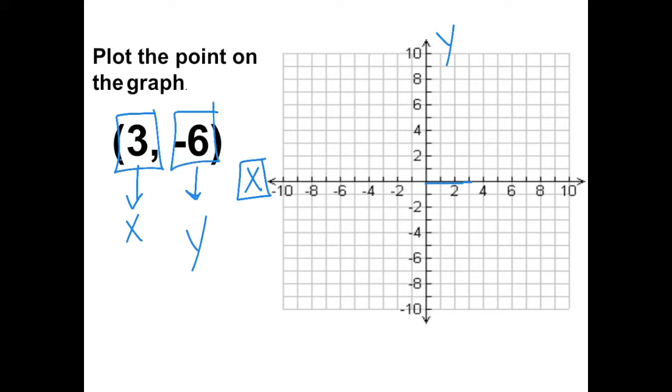Then when we're plotting our y-coordinate, we want to look for it on the y-axis. So negative 6, from where we are at 3, we would have to go down to negative 6. And this would be our point.